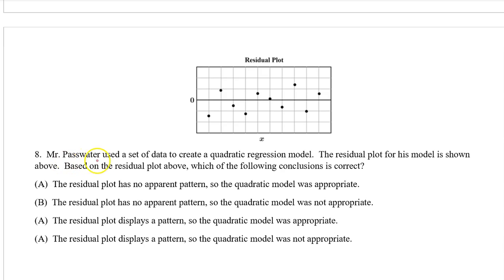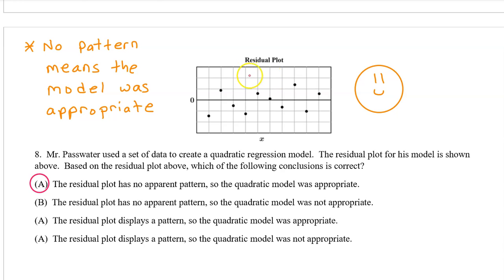Number 8. Mr. Passwater used a set of data to create a quadratic regression model. The residual plot for this model is shown above. Based on the residual plot above, which of the following conclusions is correct? Remember, when you are looking at a residual plot, no pattern means the model was appropriate. So the answer is A. The residual plot has no apparent pattern, so the quadratic model was appropriate.